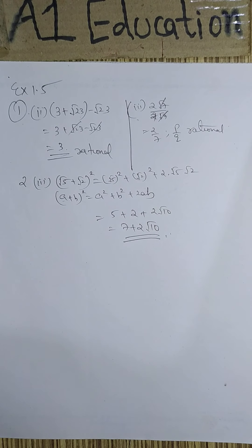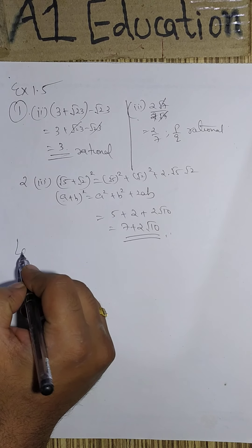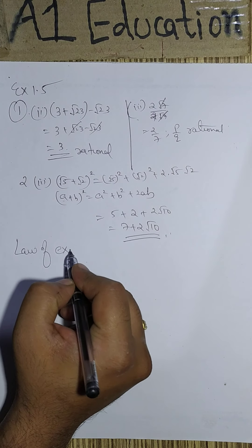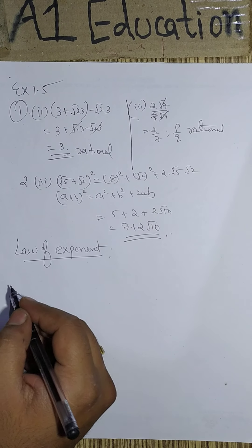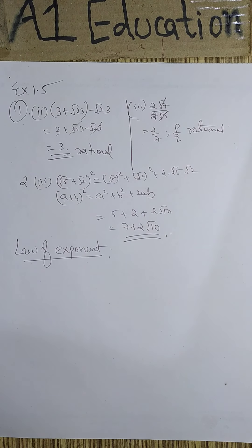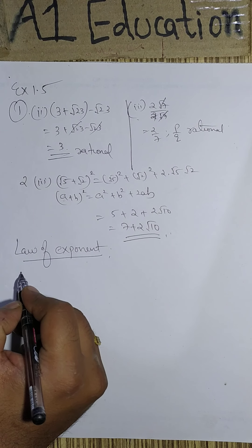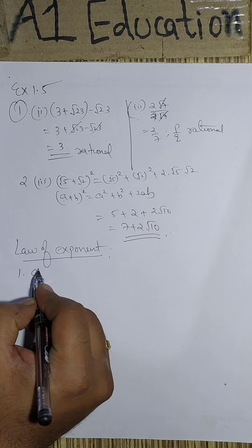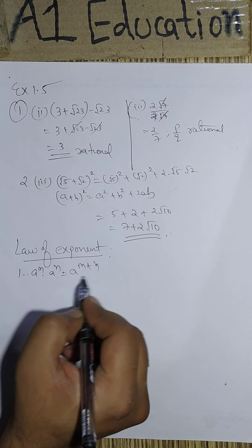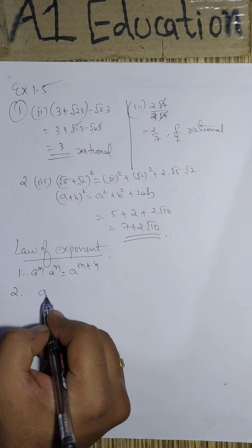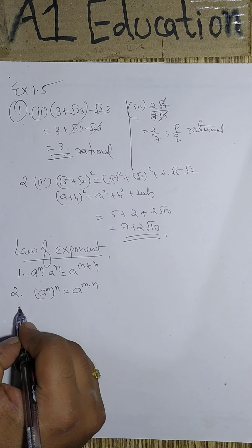Next we have law of exponents. This is again very important concept. Rules or laws of exponents involves a to the power n dot. But when bases are same, powers can be added. Please remember. a to the power m to the power n then these powers will be multiplied m into n.